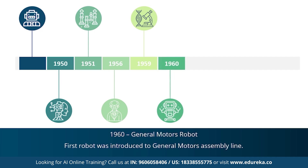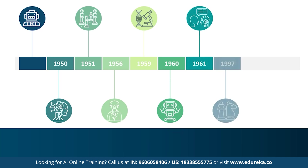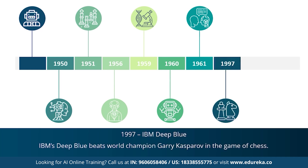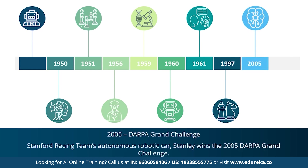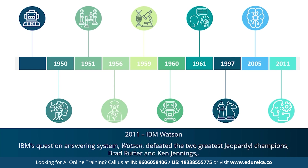In 1960, the first robot was introduced to the General Motors assembly line. In 1961, the first AI chatbot called Eliza was introduced. In 1997, IBM's Deep Blue beat world champion Gary Kasparov in chess. 2005 saw an autonomous robotic car called Stanley win the DARPA Grand Challenge. In 2011, IBM's Watson defeated the two greatest Jeopardy champions, Brad Rutter and Ken Jennings. That was a brief history of AI.